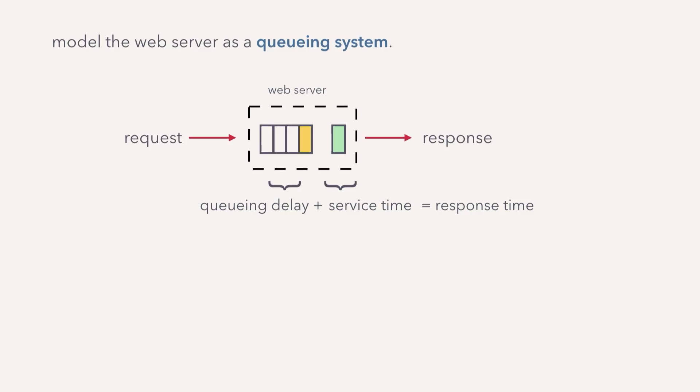We're going to answer these questions by modeling our system as a queuing system. Requests come in at some arrival rate. If the server is free, they're processed immediately. But if the server is busy processing other requests, the requests will queue. The time a request spends in the queue is called the queuing delay. The server picks off a request and processes it — that time is called the service time. So the response time is simply the queuing delay plus the service time.